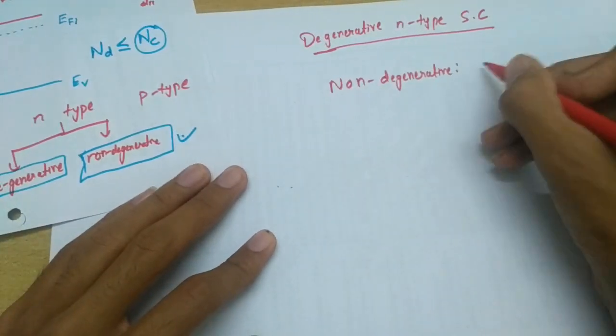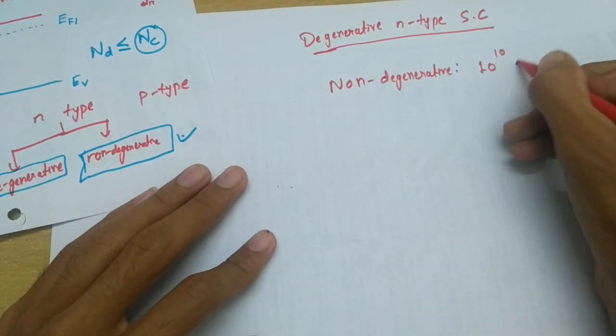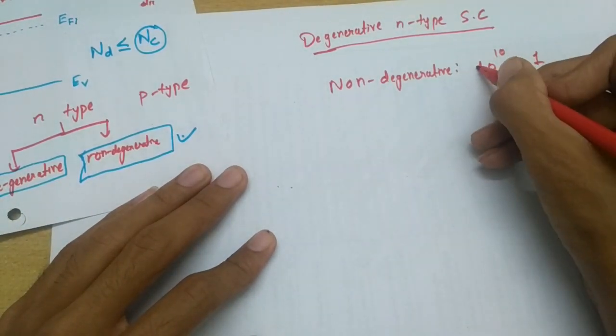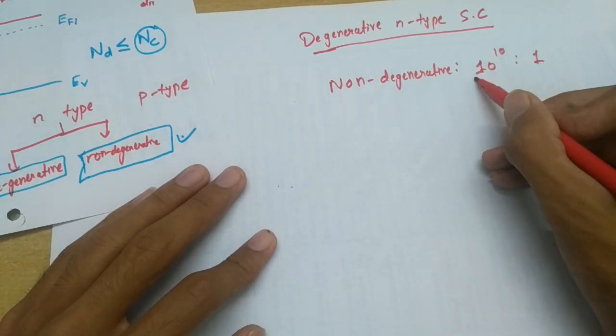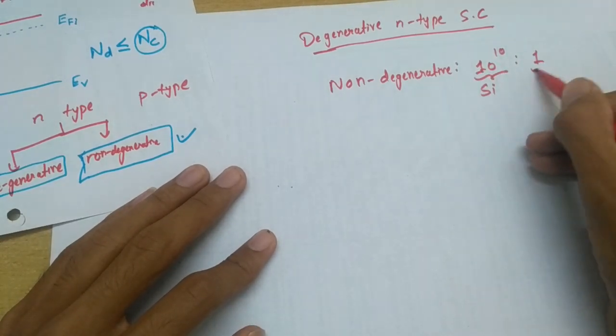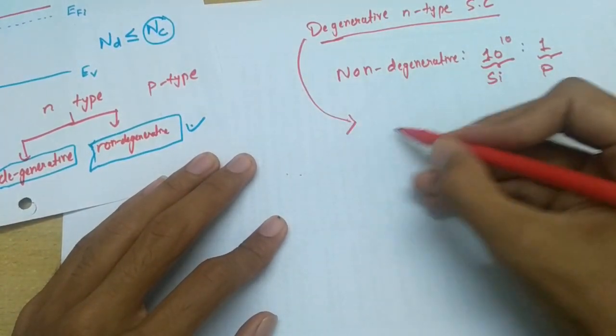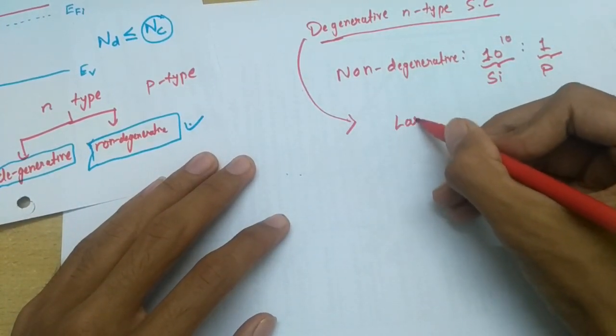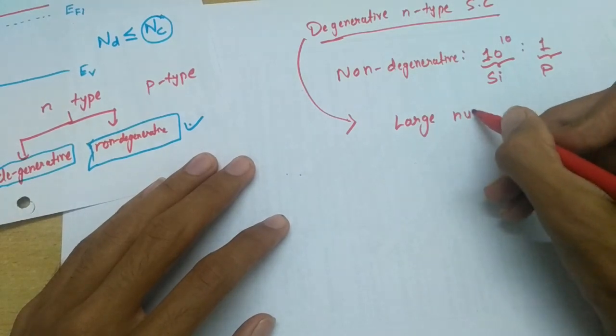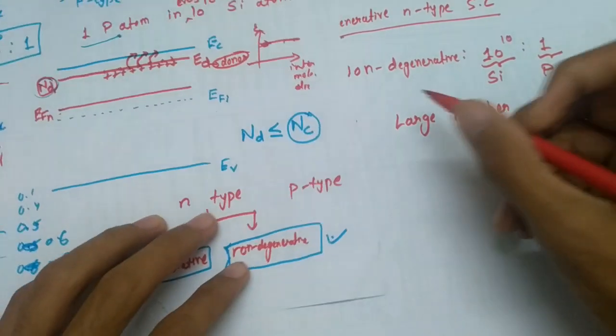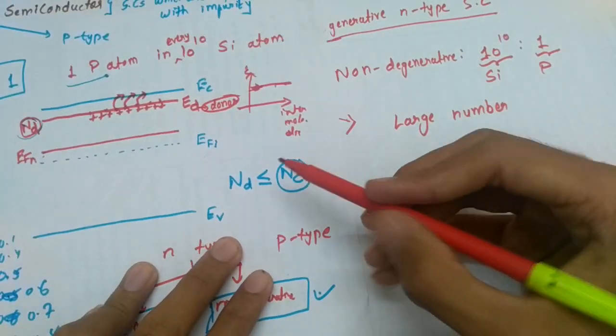We have doping concentration like this: in every 10 raise to 10 silicon atoms we have one phosphorus atom. But in case of degenerative, we have large number. In case of non-degenerative we have this equation that is ND, the concentration of the doping impurity...